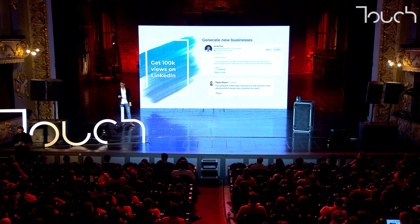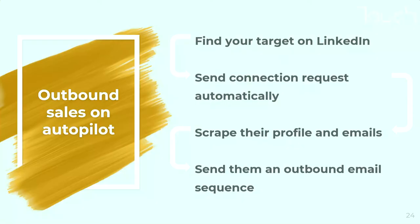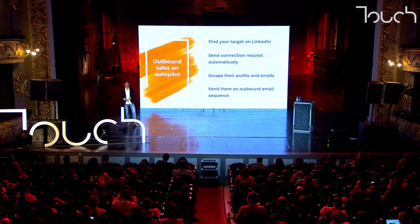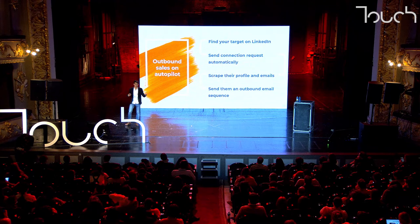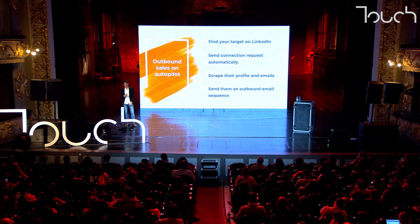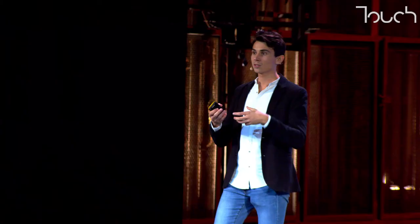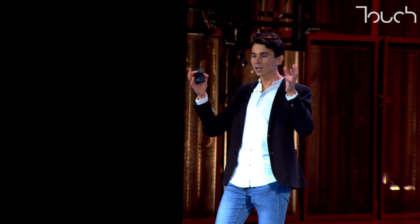Now I'm going to show you how to put your outbound sales process on autopilot. When it comes to outbound, it usually takes a lot of time to find the right person to contact, find their email, and then send emails. If you're in sales or a founder doing this, it's very repetitive and annoying — and you can automate it. The goal of this multi-step process is: start by finding your target on LinkedIn (especially for B2B, since LinkedIn has pretty much everyone), send connection requests automatically, then scrape their profile to get their emails — meaning extract all the data from their profile — and finally send an outbound email sequence. For that, you need three tools: Phantom Buster, Drop Contacts, and Lemlist.